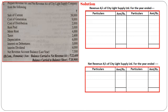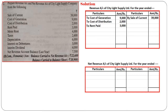Sale of current is income for an electric generation company, so it is credited in revenue account: sale of current — Rs. 39,000. Cost of generation is an expense, debited in revenue account — Rs. 9,000. Cost of distribution is also an expense, debited in revenue account. Rent paid is an expense, debited in revenue account. Meter rent is income for the organization — whenever the electricity company installs a meter, it charges rent, so it is credited: by meter rent — Rs. 4,000. Taxes are debited as an expense, and depreciation is debited — Rs. 6,000.